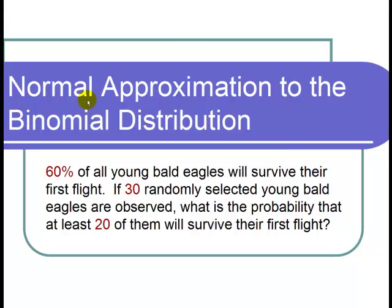This is a video on the normal approximation to the binomial distribution. The question states: 60% of all young bald eagles will survive their first flight. If 30 randomly selected young bald eagles are observed, what is the probability that at least 20 of them will survive their first flight?